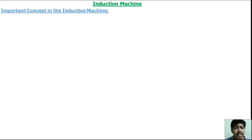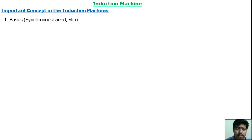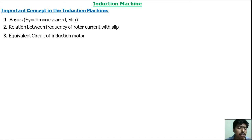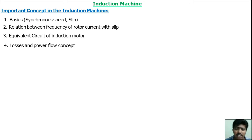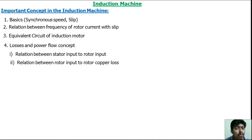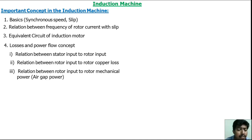The important topics in the induction machine are: first, the basics — what is synchronous speed, what is slip. Second, the relations between the frequency of rotor current. Third, the equivalent circuit of induction motor. Fourth, losses and power flow concepts — the relation between stator input and rotor input, rotor input and rotor copper loss.